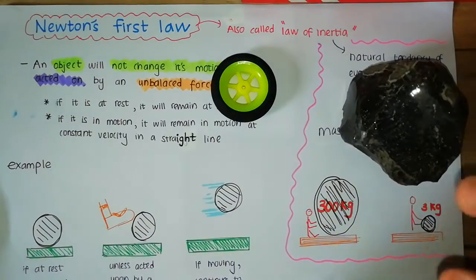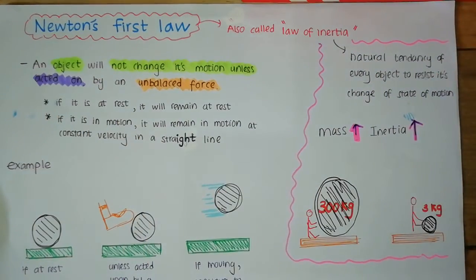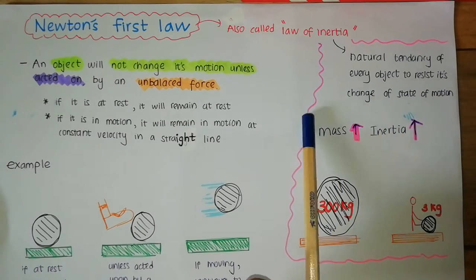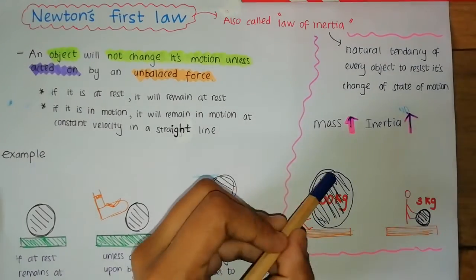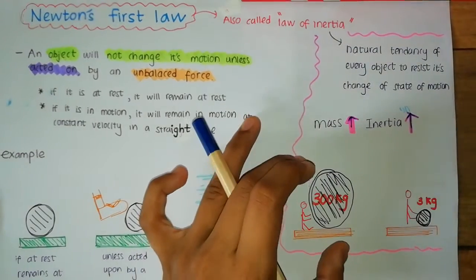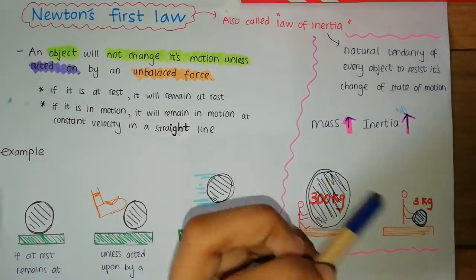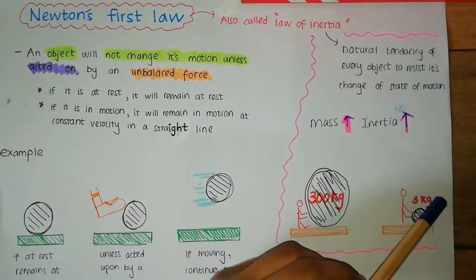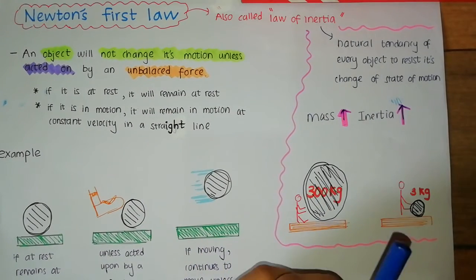That's the concept of inertia. Inertia is the natural tendency of every object to resist its change of state of motion. If you have something with a greater mass, you need to apply a large amount of force to change its state of motion, whereas if you have something small you only need a small amount of force.